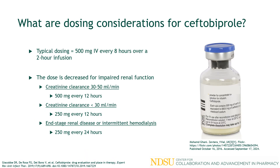The next question is: what are dosing considerations for ceftobiprole? The typical dosing is 500 mg IV every 8 hours over a 2-hour infusion, and it's supplied as a powder for reconstitution in a single-dose vial as pictured on the right. It is primarily excreted via the kidneys, so there are dose adjustments for impaired renal function, specifically when creatinine clearance is less than 50, in patients with end-stage renal disease, or for those undergoing intermittent hemodialysis.